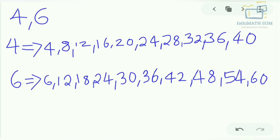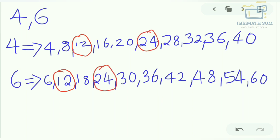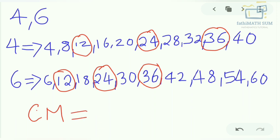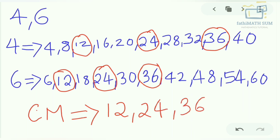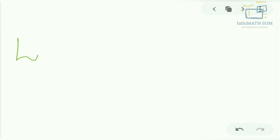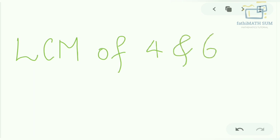Now observe the numbers which are repeating in both lists. Yes — 12 is repeating in both 4 and 6, 24 is repeating, 36 is also repeating, and this continues. These are known as common multiples. So the common multiples are 12, 24, 36, and so on. Among these, the smallest one is 12.